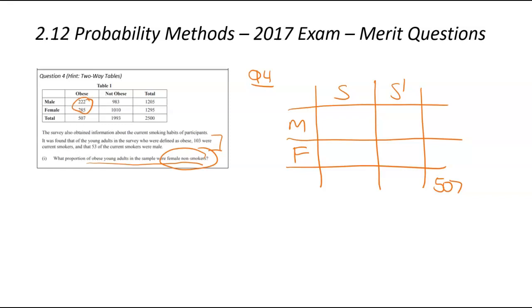There is 507. Of the obese people, 222 were male and 285 were female. The rest of the information is going to come from the hidden numbers in the words. It was found that of these young adults, 103 were current smokers. So this smoking total here is going to be 103, which means that there is 404. And if you're wondering how I got that, I've got 507 minus 103.